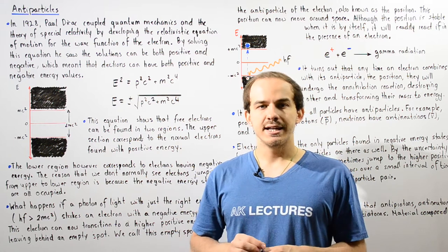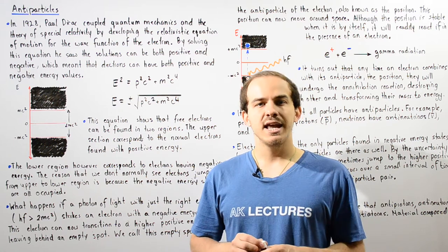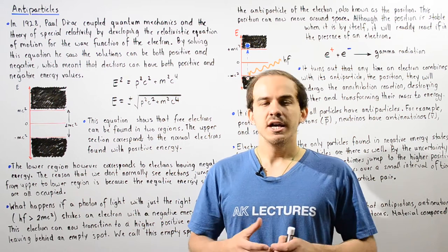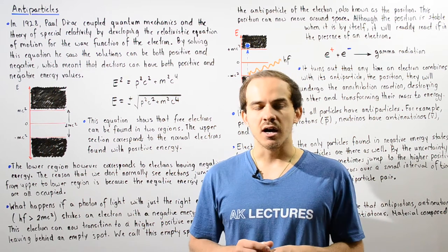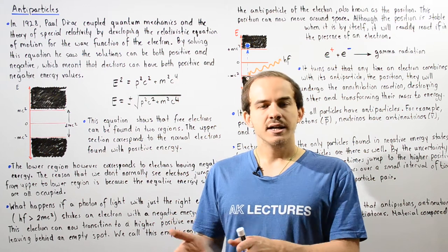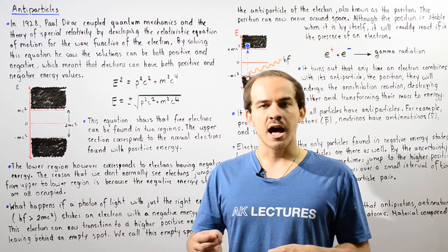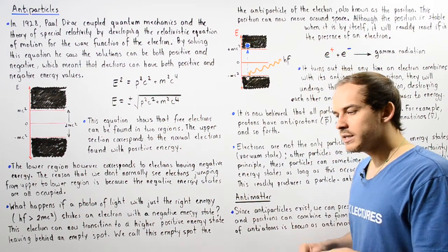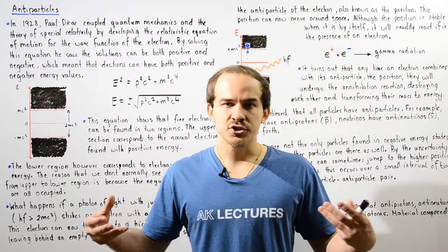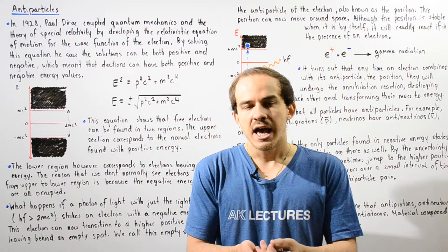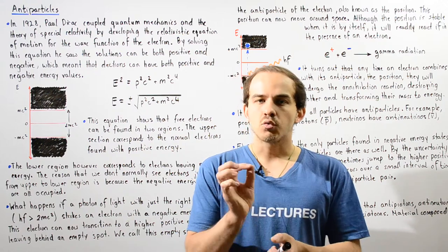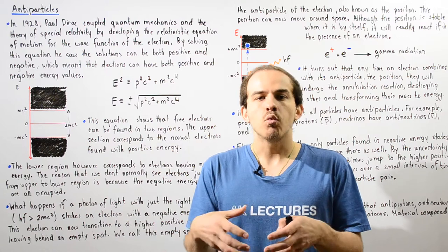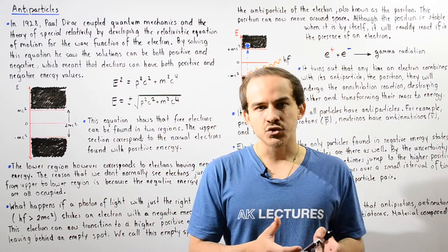In 1928, an English physicist by the name of Paul Dirac hypothesized that electrons can have a negative amount of energy, and this led to the discovery of antiparticles. Paul Dirac combined quantum mechanics and the special theory of relativity, and he formulated the relativistic equation of motion of the wave function that describes an electron.